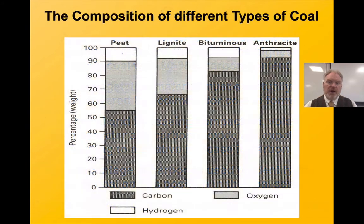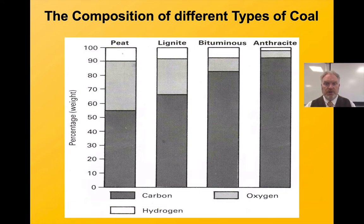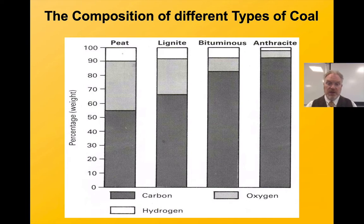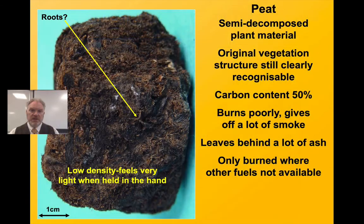This graph shows us the change in the composition of these coals of different ranks. Notice in particular the proportion of carbon. As we go from peat to lignite to bituminous coal to anthracite, we see an increase in the amount of carbon. This is reflected as well in the appearance of these sediments.